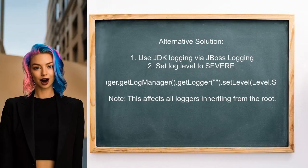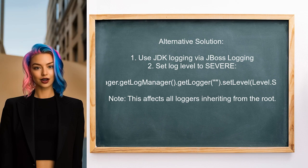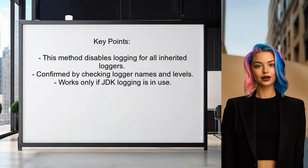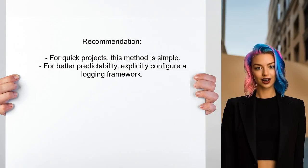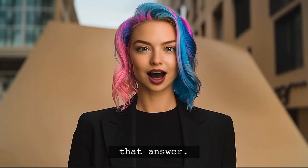Another alternative solution involves adjusting the log level for Hibernate. If no specific logging options are set, Hibernate defaults to using JDK logging via JBoss logging. By setting the log level to severe, one user successfully stopped the show warnings commands. They discovered this by checking the logger names and confirming that the root logger was the only one with a set level. However, this is a broad approach as it disables logging for all loggers that inherit from the root. While effective for quick projects, it's better to explicitly configure a logging framework for more predictable results.